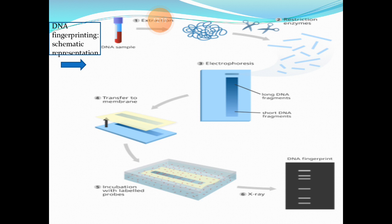Wherever all the target sequences are present, the DNA is cut, and you will get a number of DNA fragments. These fragments are then separated by agarose gel electrophoresis. The molecules of DNA separate based on their molecular weight — long DNA fragments with higher molecular weights move up, whereas short DNA fragments with lesser molecular weights remain at the base.